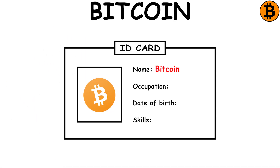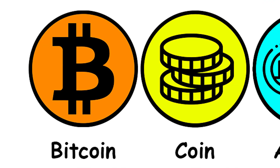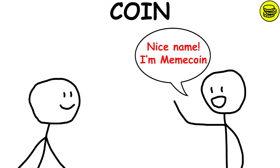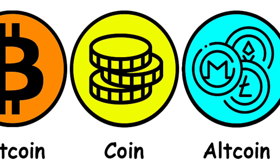Bitcoin: it is the first cryptocurrency ever created, as well as the most used and best known. Coin: it is a simple term used to indicate a cryptocurrency, often used as a suffix within compound words.